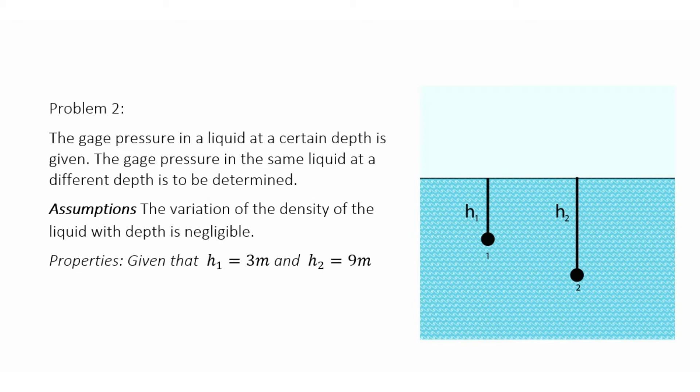So we don't notice it at all. And then we're given that H1 is equal to 3 meters and H2 is equal to 9 meters. We're also given that P1 is equal to 28 kilopascals.